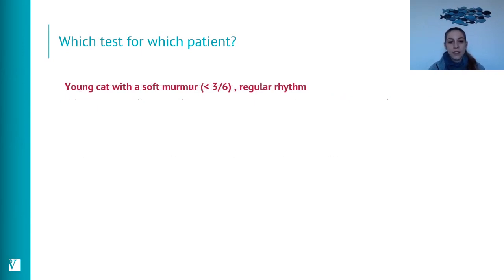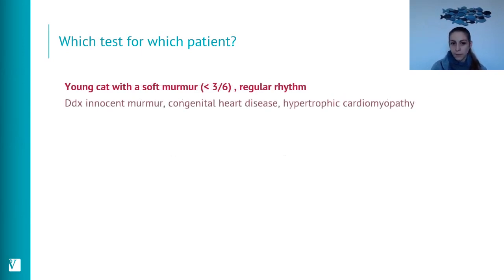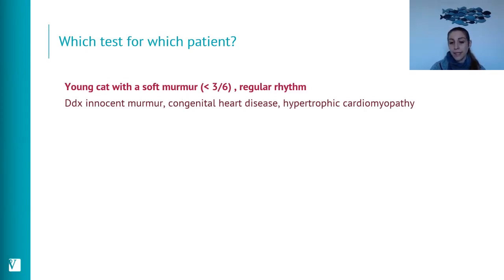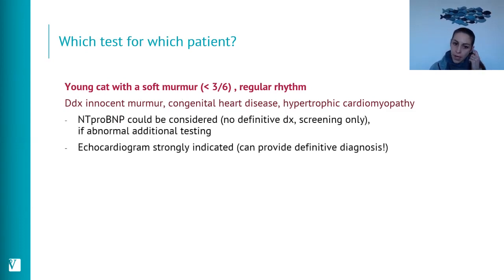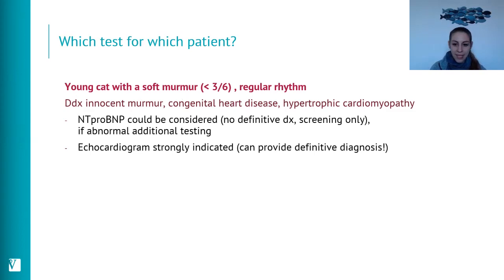Scenario 7: a young cat with a soft murmur and regular rhythm. Differentials include innocent murmur, hypertrophic cardiomyopathy, or congenital heart disease. NT-proBNP can be used for screening to assess whether the murmur is associated with ventricular wall stress. However, echocardiography is the most informative test and should be offered because it provides a definitive diagnosis.